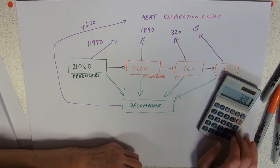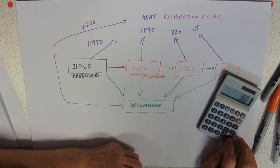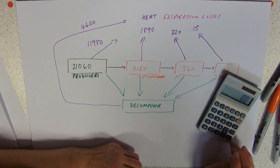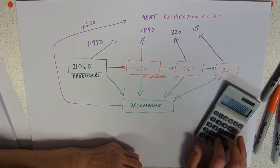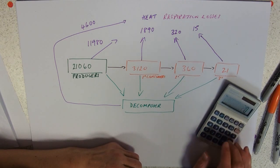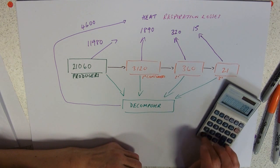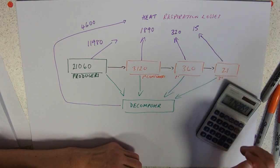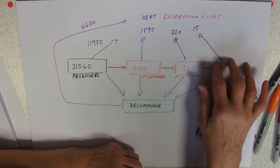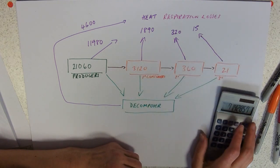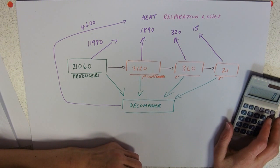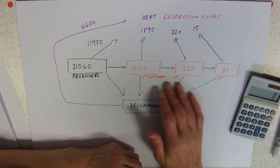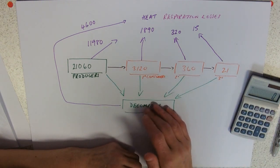If we look at this lot: 320 divided by 360 times 100 — they're losing nearly 90%. And then 15 divided by 21 times 100 — they're losing about 70%. So these are all organisms that are losing a really high percentage of their incoming energy in respiration. All the rest of it is going off to these decomposer chains.